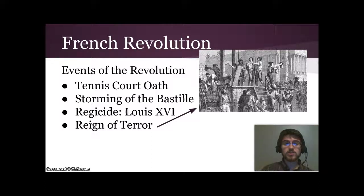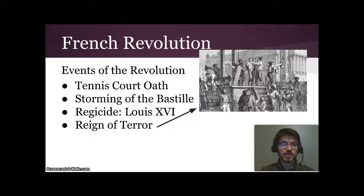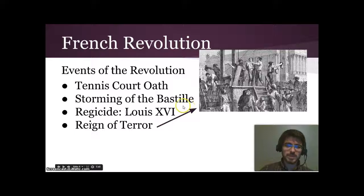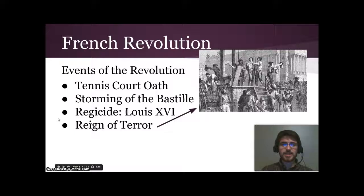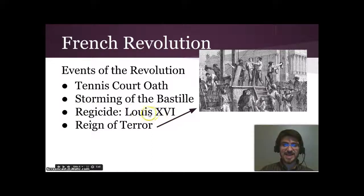Those excluded people took the Tennis Court Oath — swearing to stay until their demands were met, even though the king had told them to leave. This led directly into revolution as people living in Paris got involved. They stormed the political prison called the Bastille and freed some prisoners there. Then, as the people took control of the streets of Paris, they brought King Louis XVI and his wife Marie Antoinette back into the city, accused them of crimes, put them on trial, and had Louis XVI executed.